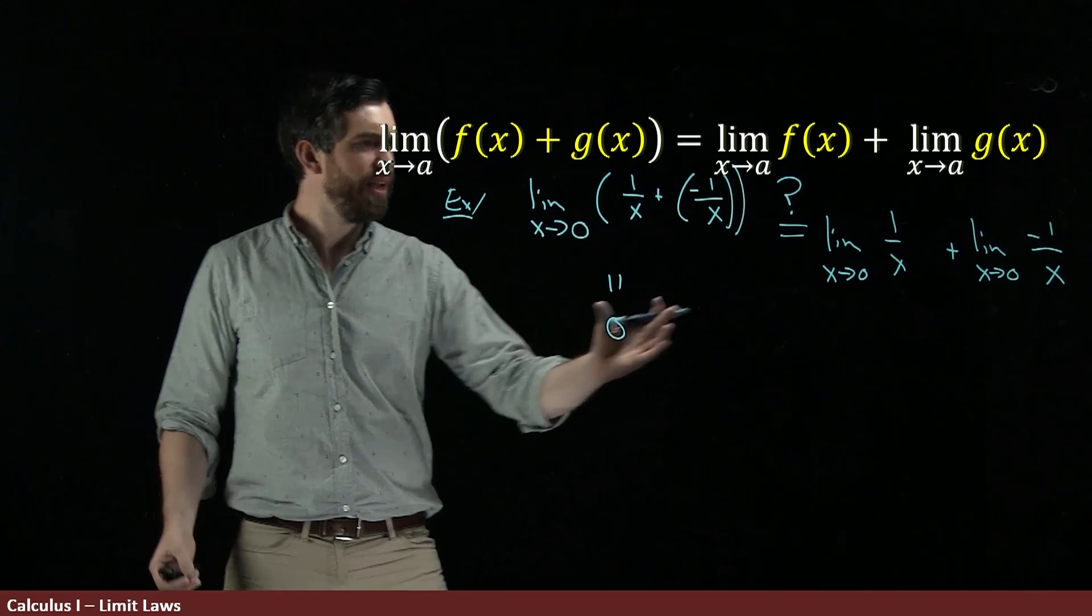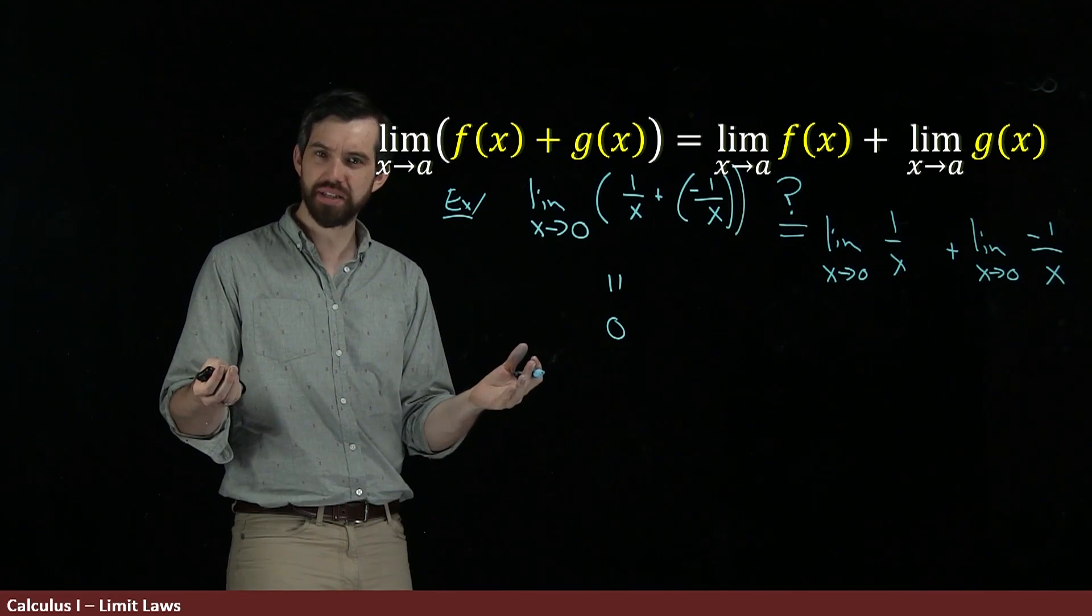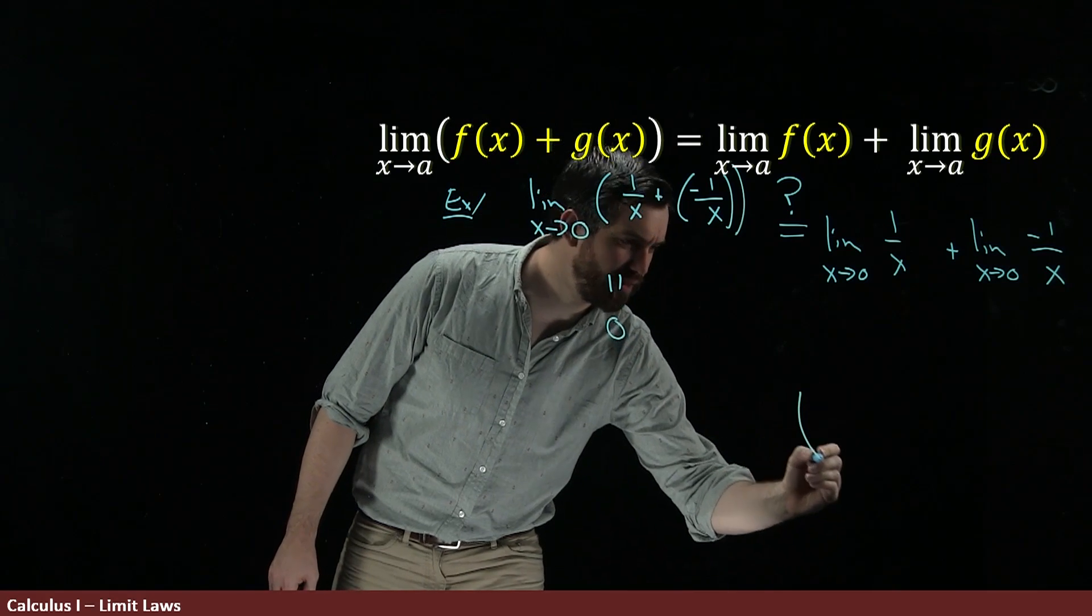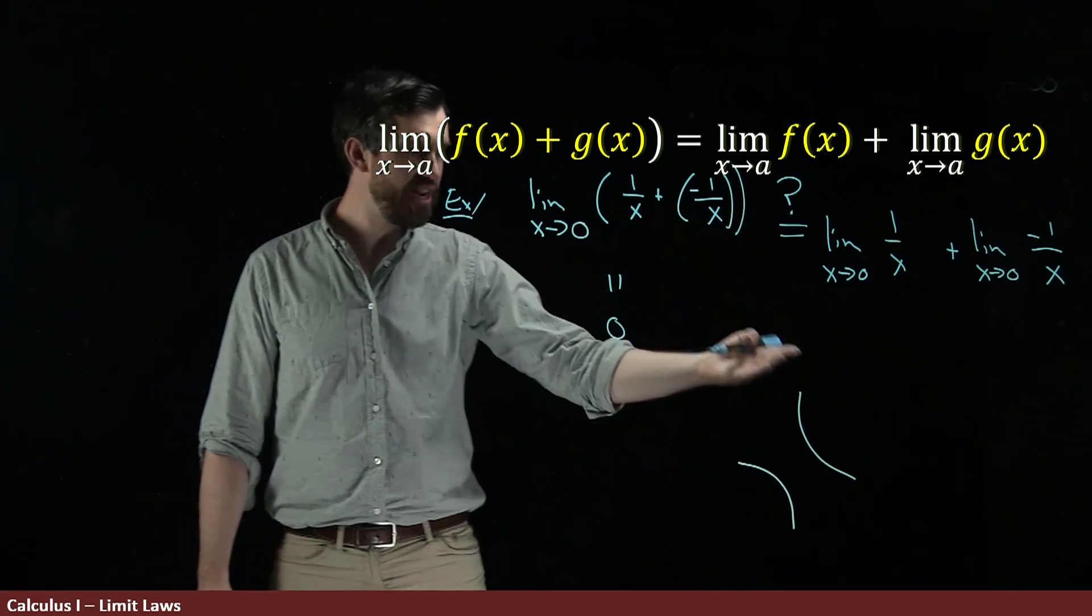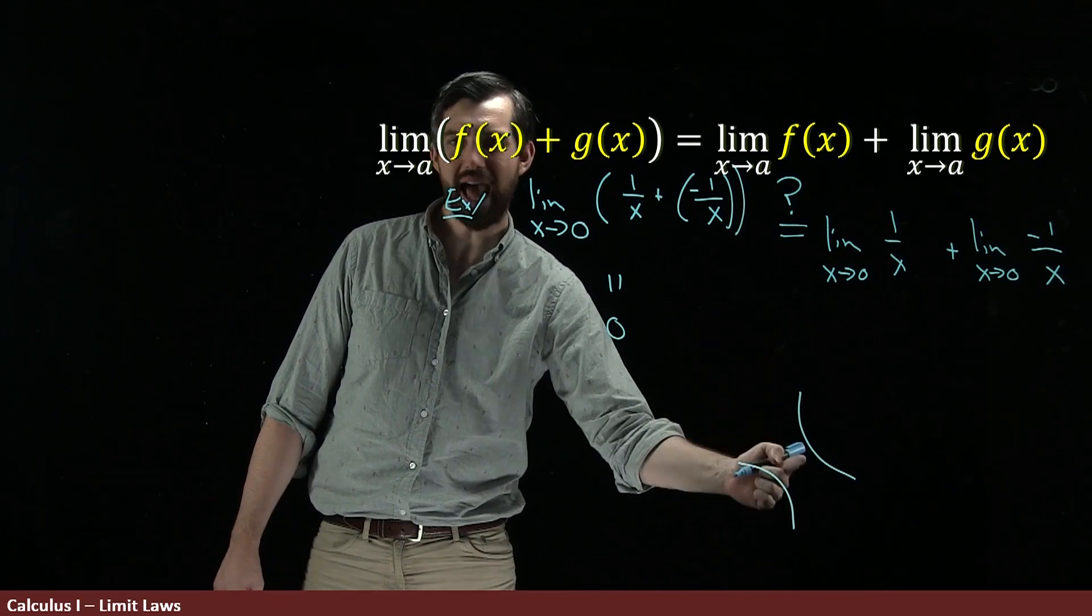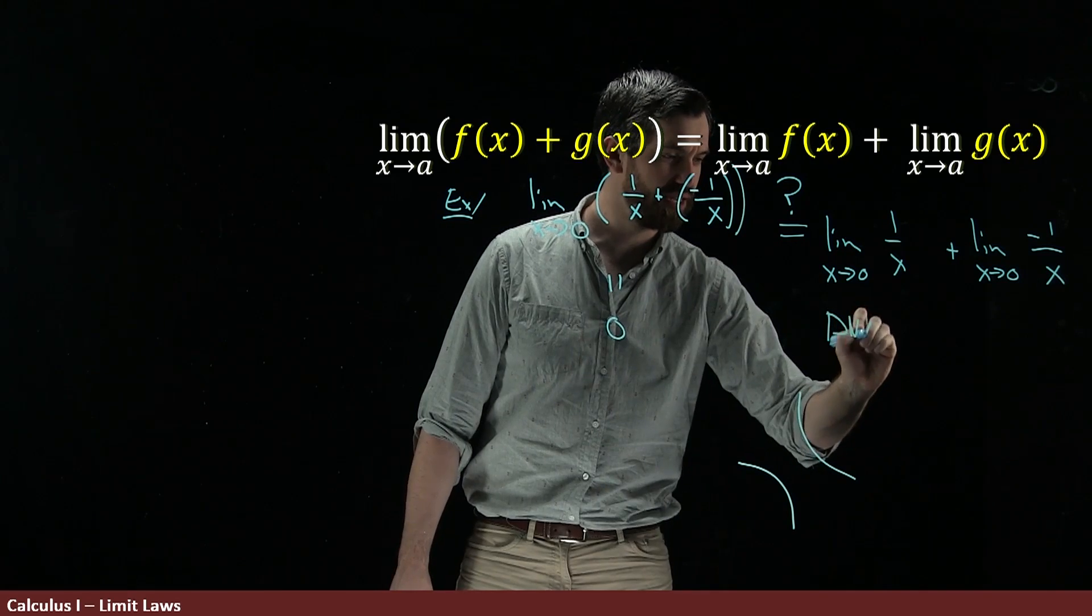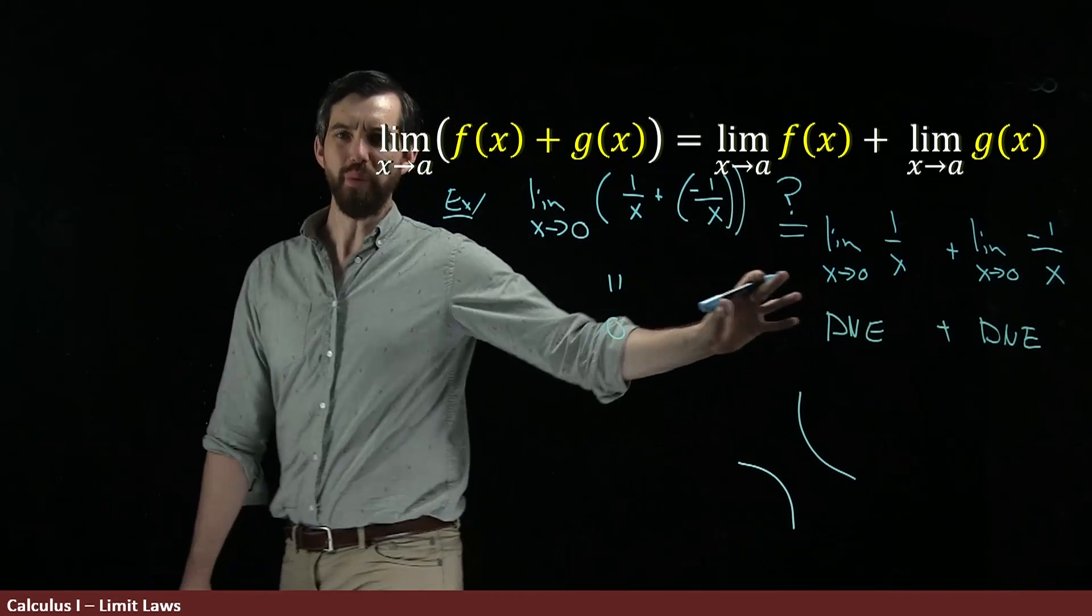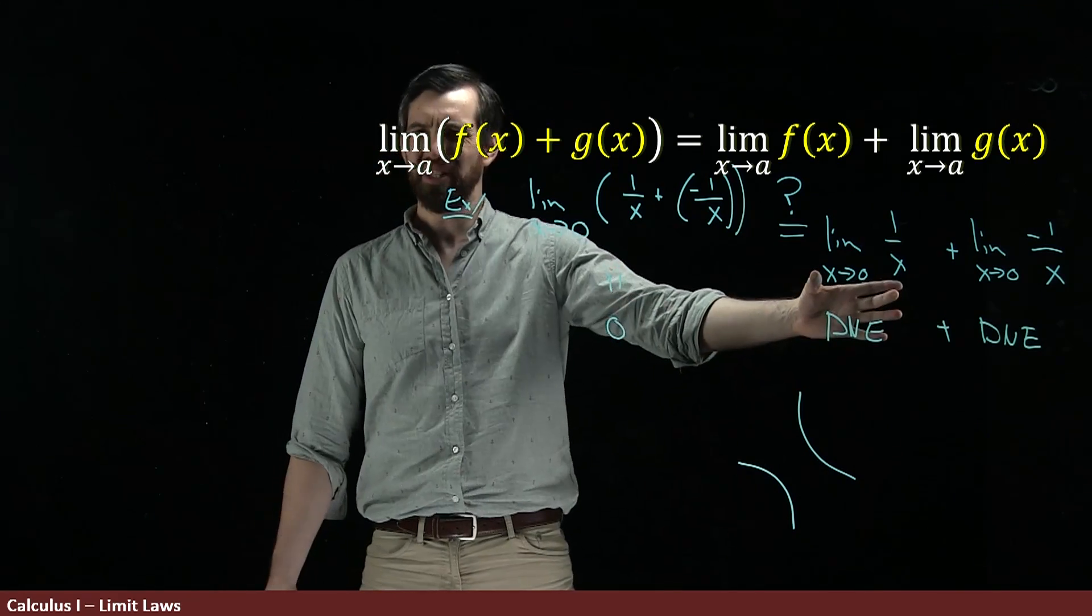However, the problem is that neither of these two limits actually exist. Indeed, the graph of 1 over x is something that looks a little bit like this, and then the minus sign is going to flip it for the other. This is something where the limit has this vertical asymptote at this particular point of x equal to 0. So this does not exist, and this other limit does not exist.